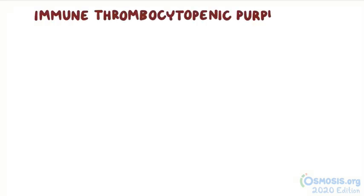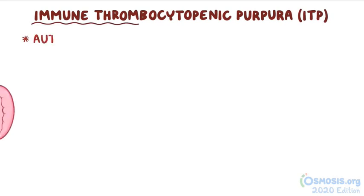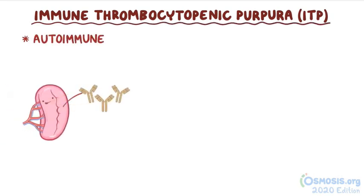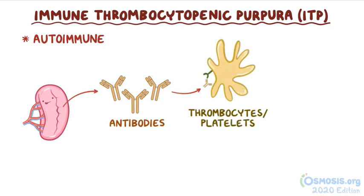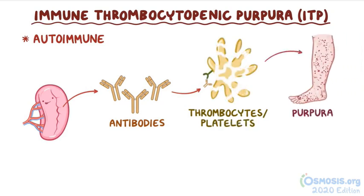Immune thrombocytopenic purpura, or ITP, is an autoimmune condition in which the body produces antibodies against its own thrombocytes or platelets, which are destroyed. This results in purpura, or small bleeding spots beneath the skin.